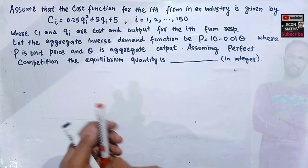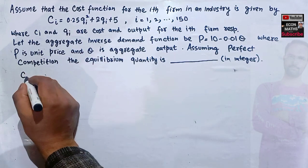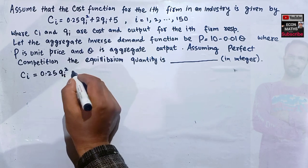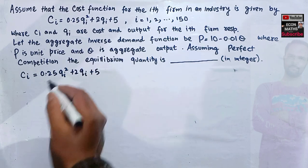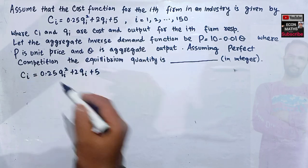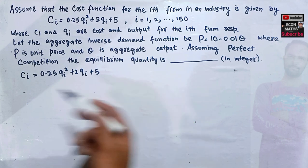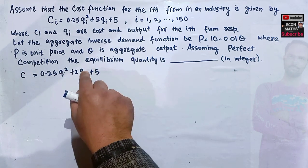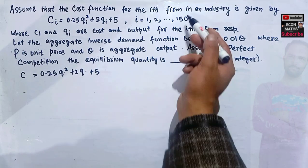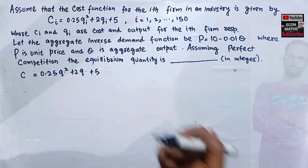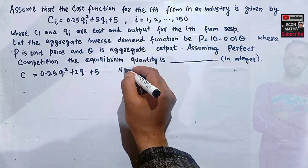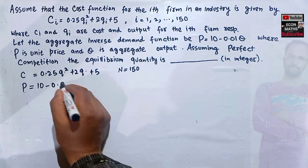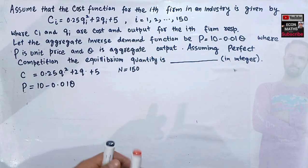So we have the cost function C_i = 0.25q_i² + 2q_i + 5. This cost function represents all 150 identical firms in the industry. We also have the number of firms equal to 150, and the aggregate demand function P = 10 − 0.01Q. We need to find the equilibrium quantity.